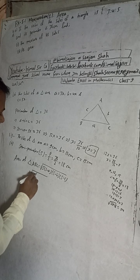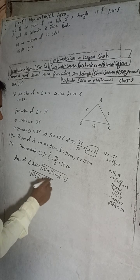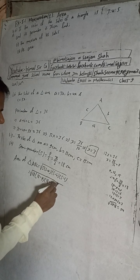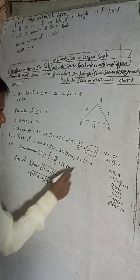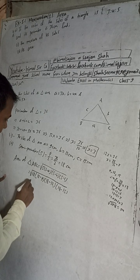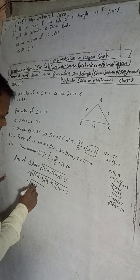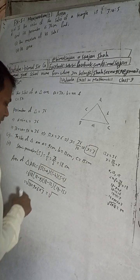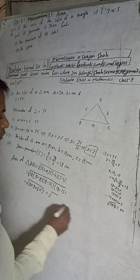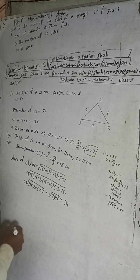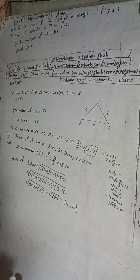Substituting: s = 18, s − a = 18 − 9 = 9, s − b = 18 − 12 = 6, s − c = 18 − 15 = 3. So the area = √(18 × 9 × 6 × 3) = √2916 = 54 cm².